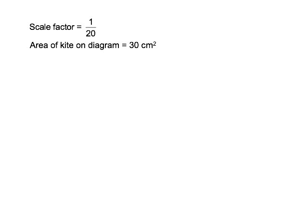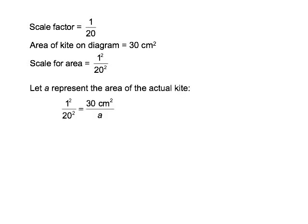To determine the amount of fabric Jasmine would have needed, I started by writing the information I knew. One centimeter on the diagram represents 20 centimeters on the actual kite. Therefore, one centimeter squared on the diagram will represent 20 squared, or 400 centimeters squared, on the actual kite. I wrote equivalent ratios to compare the scale factor to the area of the diagram and the kite. 30 centimeters squared is the area on the diagram, and A represents the area of the kite.